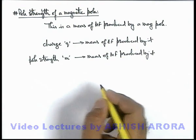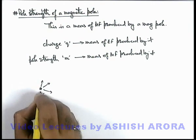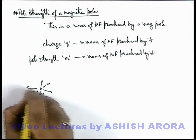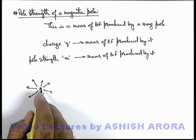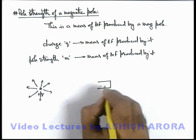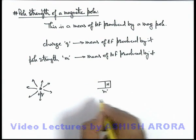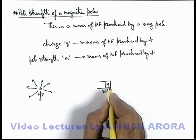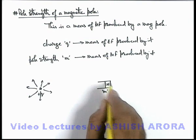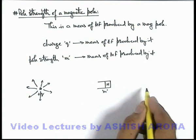In simple terms, if there is a charge q, it produces an electric field in its surroundings, and as we get closer to this charge, the magnitude of the electric field increases. Similarly, if there is a magnet having a north pole, then its pole strength m gives us an idea that as we get closer to this magnetic pole, the magnitude of the magnetic field in the close vicinity of this magnetic pole will be higher compared to distances which are away from it.